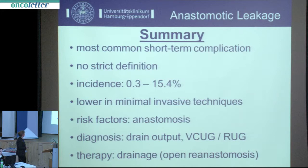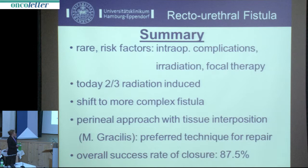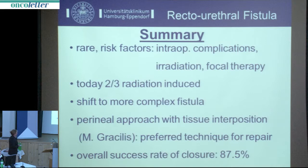To summarize: anastomotic leakage is the most common short-term complication after radical prostatectomy. There is no strict definition, hence the wide range of incidence. It seems lower in minimally invasive techniques. The major risk factor is the anastomosis itself — how it is performed and the suture material. Diagnosis is straightforward with drain output and voiding cystogram, and therapy in most cases is prolonged drainage. Recto-urethral fistula is rare but severe, with identifiable risk factors, and today around two-thirds of fistulas we see are irradiation-induced — meaning a shift to more complex fistulas.